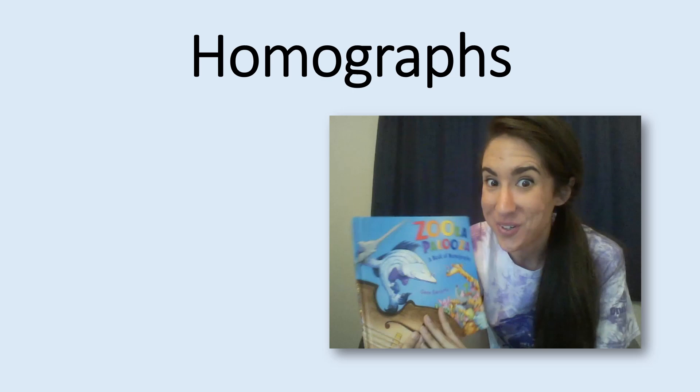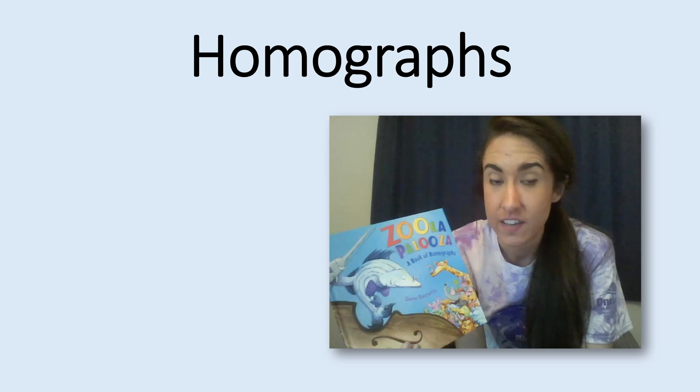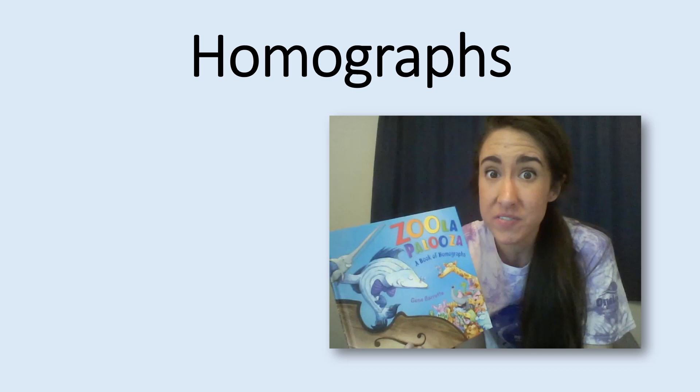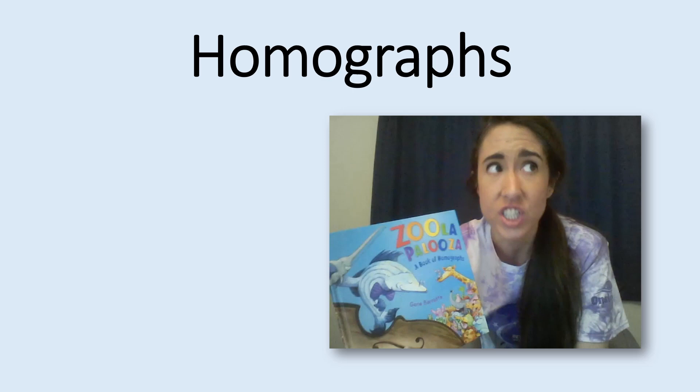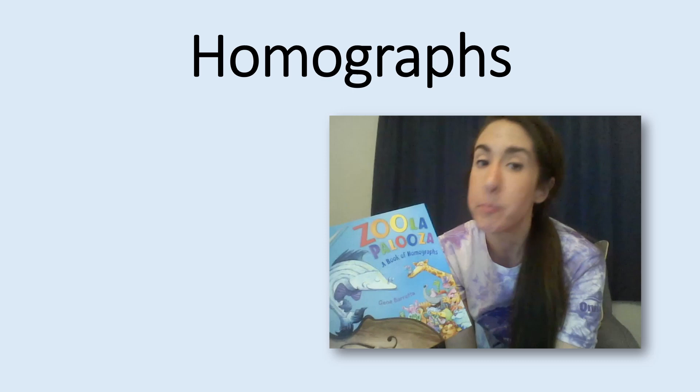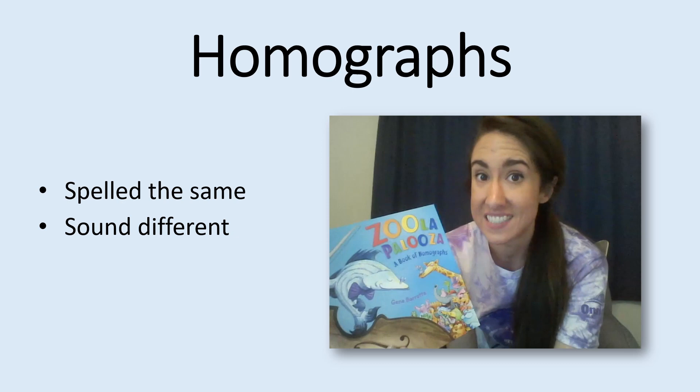So you just heard 25 different homographs. So that's 50 words that mean all different things, even though some of them are spelled exactly the same. Can you think of or search for some different homographs that maybe weren't in the story? Remember, homographs are spelled exactly the same but they sound different and they have different meanings.